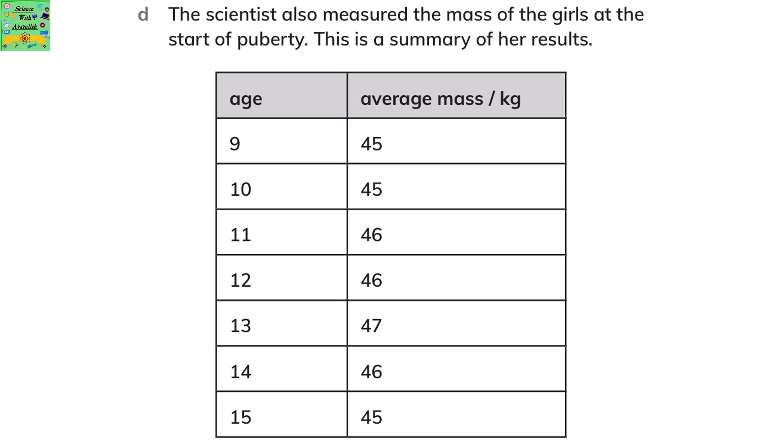The scientist also measured the mass of the girls at the start of puberty. This is a summary of her results. At age 9, average mass was 45 kg; age 10, 45 kg; age 11, 46 kg; age 12, 46 kg; age 13, 47 kg; age 14, 46 kg; age 15, 45 kg.